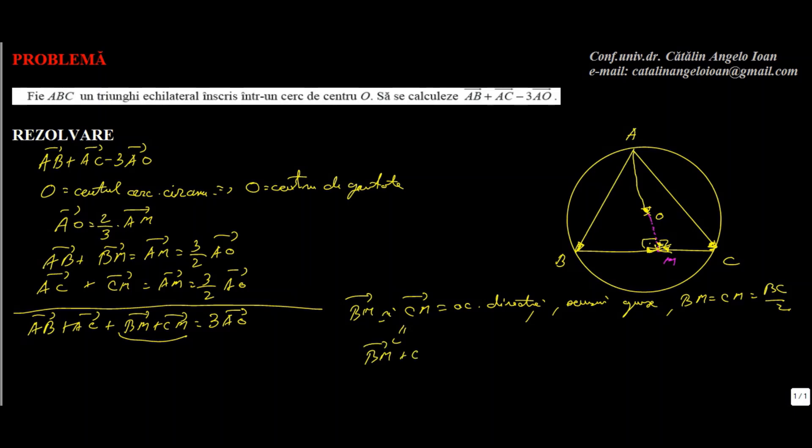Și atunci, iată ce ne mai rămâne din această relație: AB plus AC, haideți să-l trecem pe 3AO din cealaltă parte, minus 3AO. Ce ne mai rămâne este zero, exact relația pe care ne-o cerea problema.